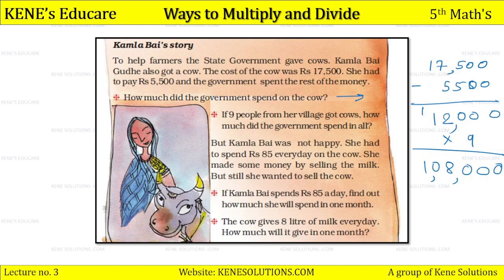But Kamla Bai was not happy. She had to spend 85 rupees every day on the cow. She made some money by selling the milk, but still she wanted to sell the cow. If Kamla Bai spends 85 rupees per day, how much will she spend in one month? Assuming 30 days in a month, we calculate 85 multiplied by 30.